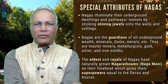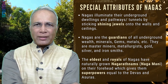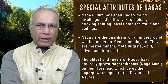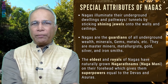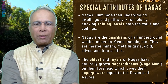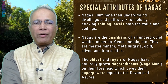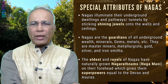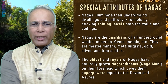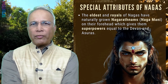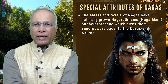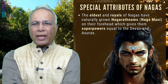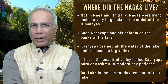The special attributes of Nagas are that they illuminate their underground dwellings and pathway tunnels by sticking shining jewels onto the walls and ceilings. Nagas are the guardians of all underground wealth — minerals, gems, and metals. They are master miners, metallurgists, and gold, silver, and iron smiths. The eldest and royals among Nagas have naturally grown Nagaratnam or Nagamani on their forehead, which gives them superpowers equal to those of the Devas and Asuras. This is what is depicted here — something truly amazing about the Nagas.